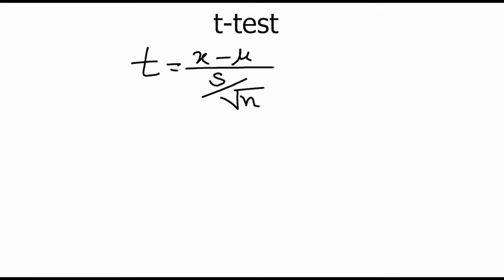The t-statistic is calculated as: t equals x-bar minus mu, divided by s over the square root of n. Here, t is the t-statistic, x-bar is the sample mean, mu is the hypothesized mean, s is the standard deviation of the sample, and n is the total number of samples.